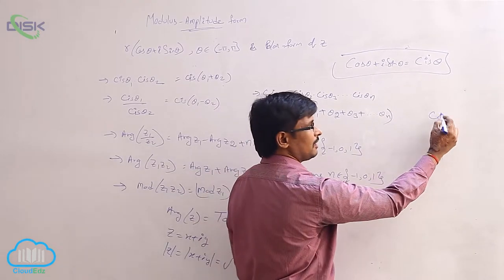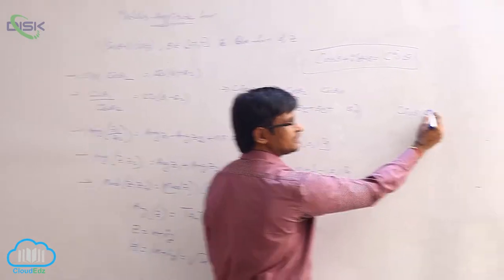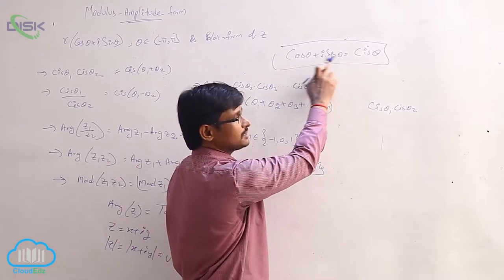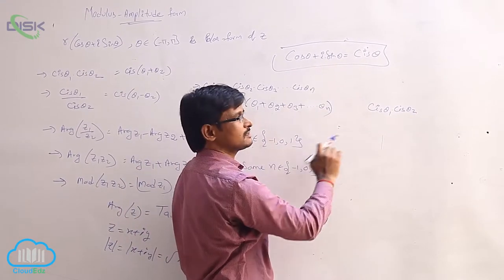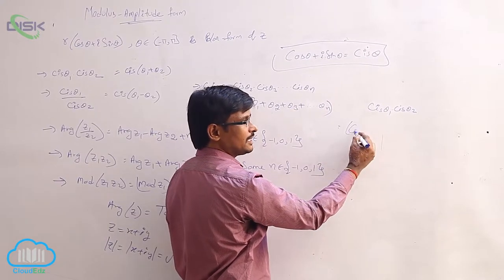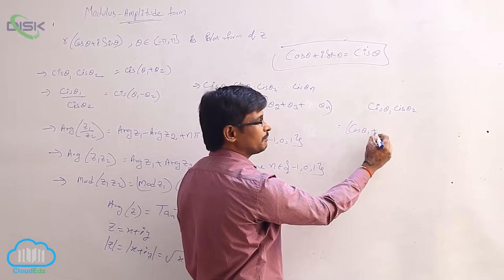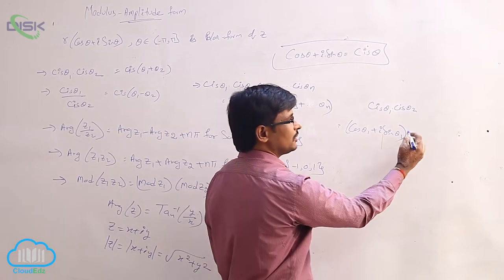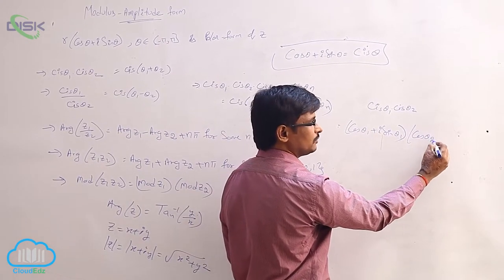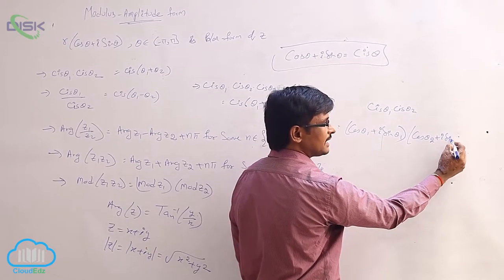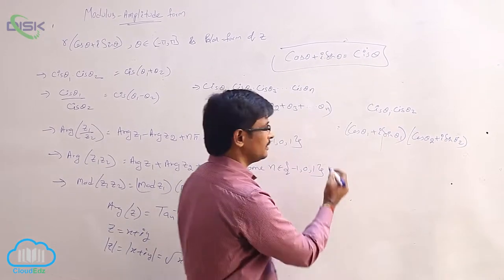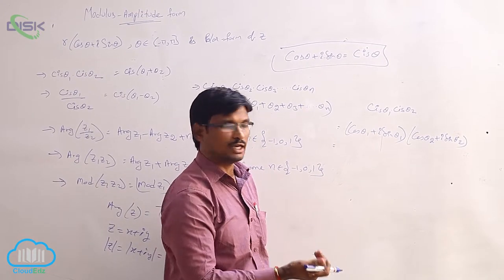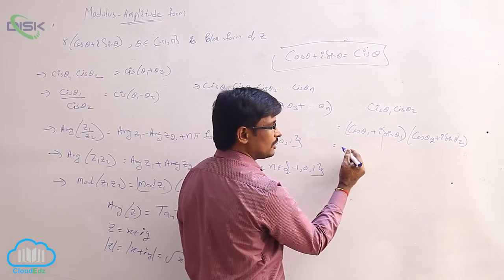Let us verify why cis θ₁ · cis θ₂ = cis(θ₁ + θ₂). By definition, cis θ₁ = cos θ₁ + i sin θ₁, and cis θ₂ = cos θ₂ + i sin θ₂. This is a general multiplication. We expand: cos θ₁ · cos θ₂ and cos θ₁ · i sin θ₂.